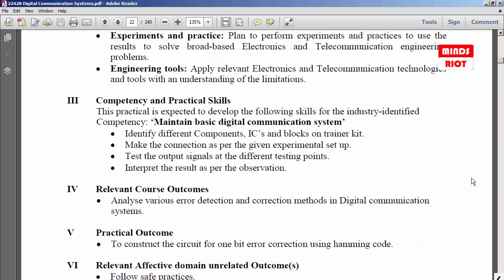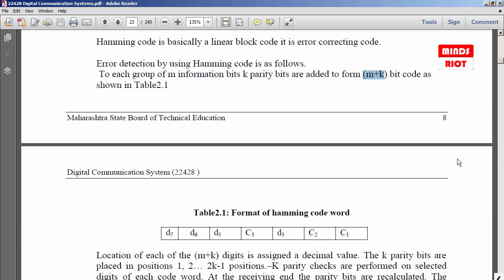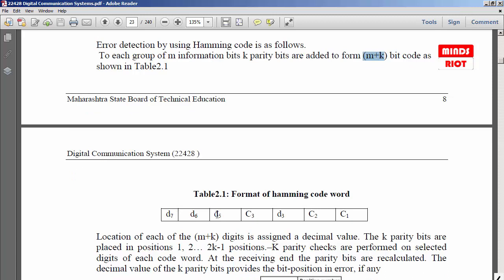As we know, 7-bit Hamming code has a combination of information bits and parity bits. In the 7-bit Hamming code there are 4 data bits: D7, D6, D5, and D3, and 3 parity bits: C3, C2, and C1.